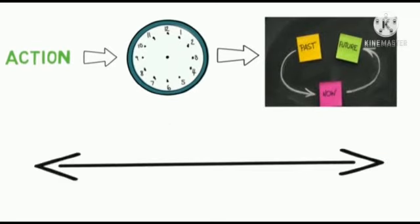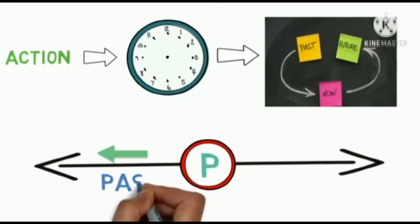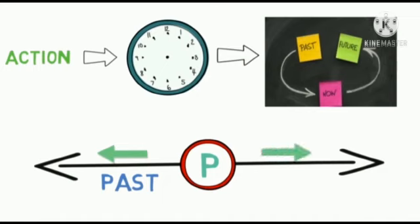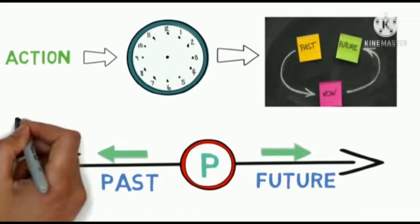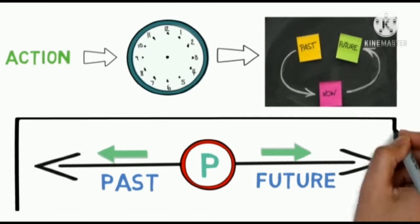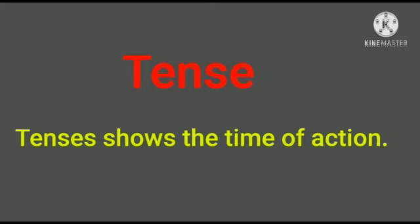Consider this timeline. The circle represents the present time. The line to the left of the circle is the time which is already past, and the line to the right of the circle is the future time. So, tenses show the time of action.